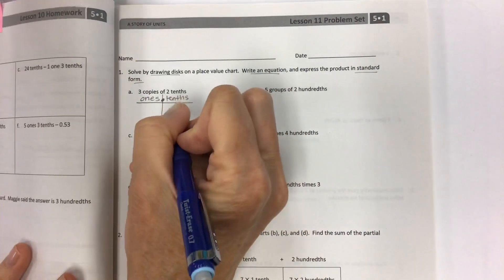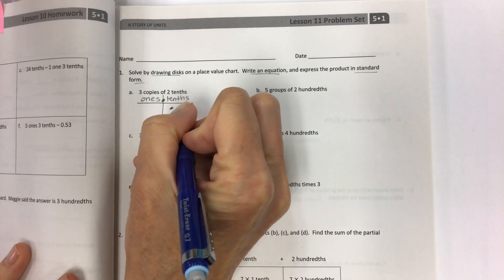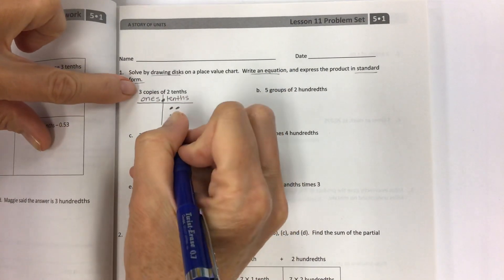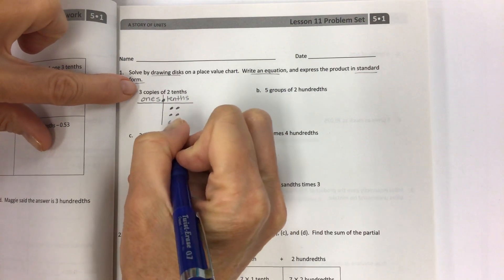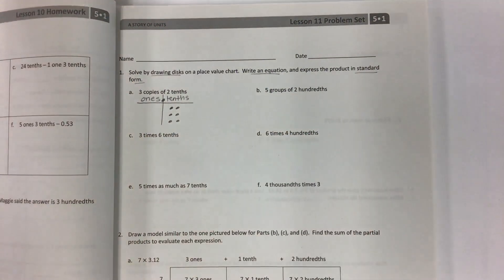I'm not gonna have any other unnecessary place value positions just because I want to keep it simple. And I have two tenths. One, two, and I have this three copies. One, two, that's two copies. One, two, that's three copies.